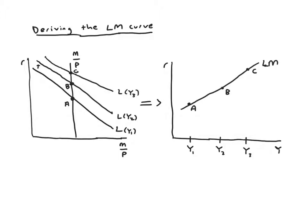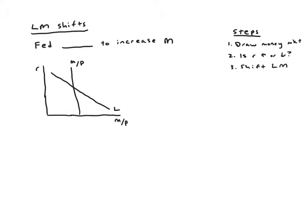All right so the last thing we'll do with the LM curve, which is the main thing we care about whenever we draw curves, is we'll think about what would cause it to shift. And we'll use the same steps we used for analyzing what would cause IS to shift. So our scenario is that the Fed does something to increase the money supply.